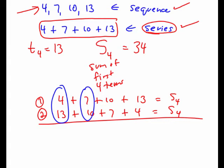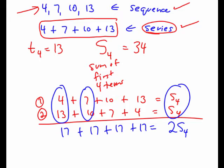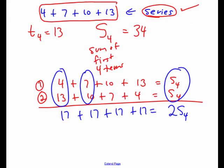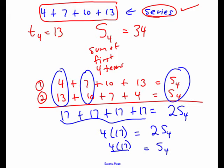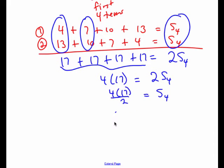Now when I do that, you'll notice that these terms all become 17 in this case. And what we get here is two S4s, two sums. So we could write this as four groups of 17. And so S4 is 4 times 17 divided by 2. And of course that's going to work out to be the 34 that we got above.